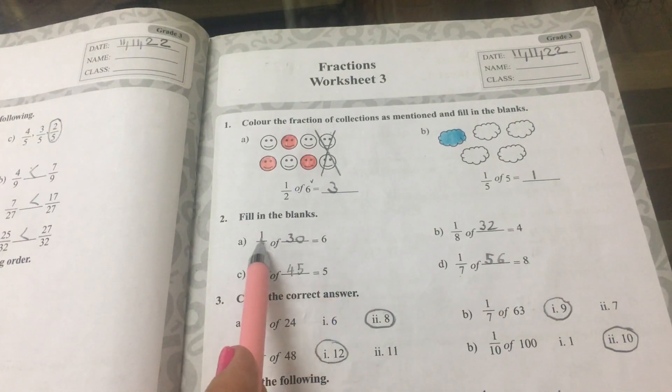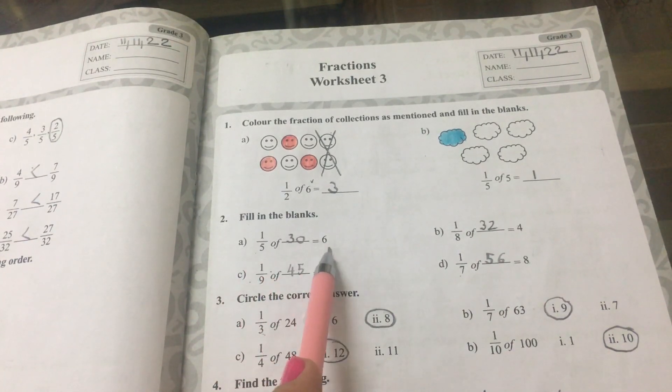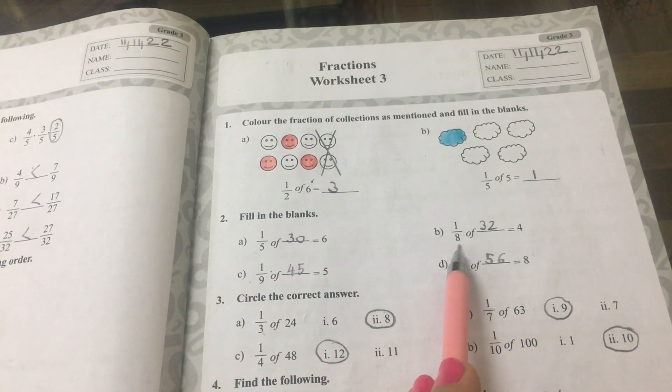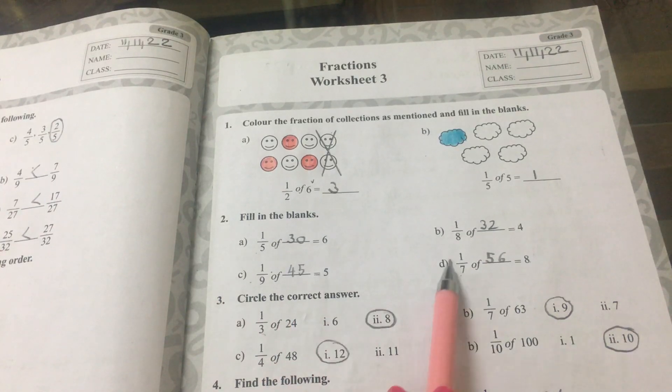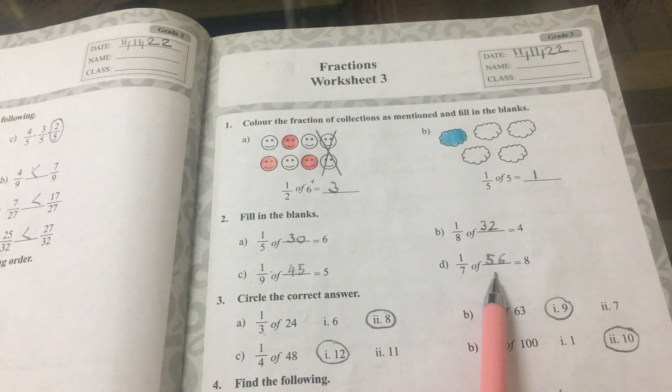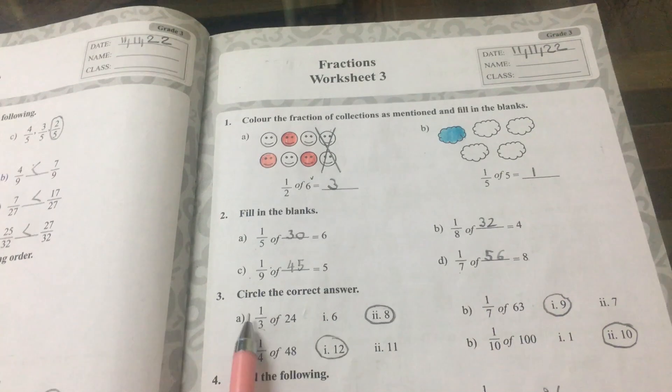Fill in the blanks. 1 fifth of 30 equals to 6, 1 eighth of 32 equals to 4, 1 ninth of 45 equals to 5, 1 seventh of 56 equals to 8.